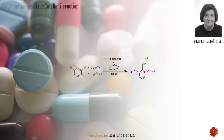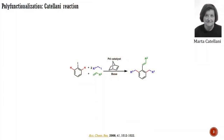I want to start with a remarkable transformation developed in the group of Catellani. They found that when a cross-coupling reaction involving aryl halides is conducted in the presence of bicyclic olefins like norbornene, the reaction ends up with the formation of a polyfunctionalized product. Starting from a monofunctionalized aryl halide, it is possible to obtain a 1,2,3-trisubstituted arene in good yields and selectivity.